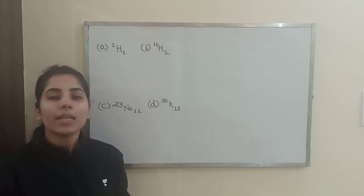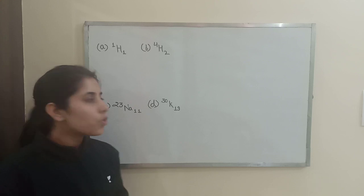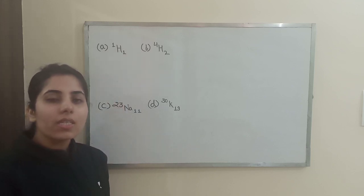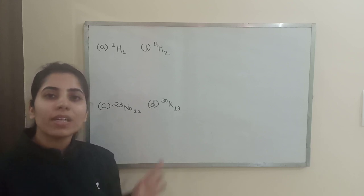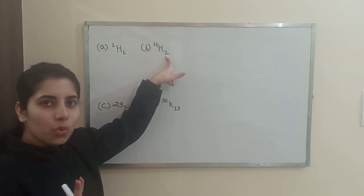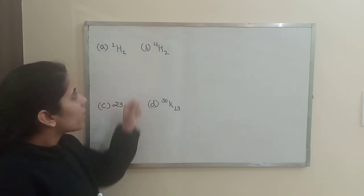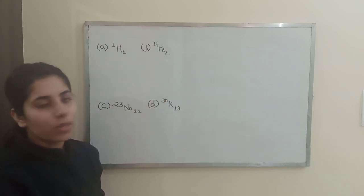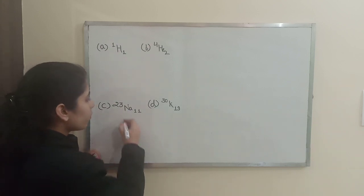We are given these elements and we want to find which will exhibit Bose-Einstein condensation. What we need to do is observe the number of electrons, protons, and neutrons. For hydrogen, that is 1 electron + 1 proton, the total sum is 2, which is even — so it is going to show Bose-Einstein condensation. For helium, electrons=2, protons=2, neutrons=2, so 4+2=6, which is again even, meaning helium will also exhibit Bose-Einstein condensation.